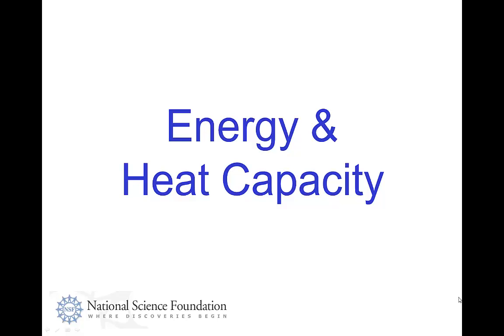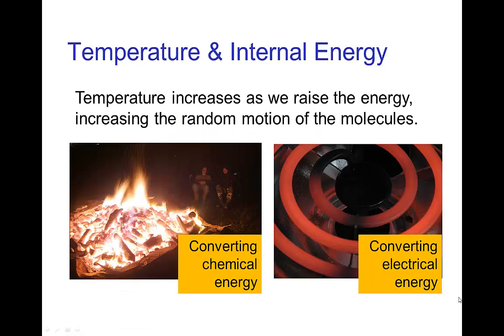Energy and heat capacity. We've seen that temperature is related to the molecular energy within an object, and temperature will increase as we increase the energy, which increases the random motion in molecules. There's a variety of ways of increasing that energy - we can release chemical energy like in a fire or convert electrical energy like in an electric range.